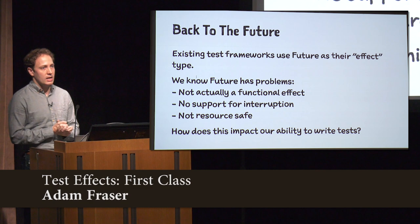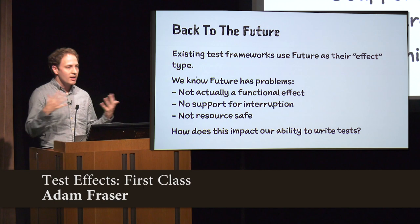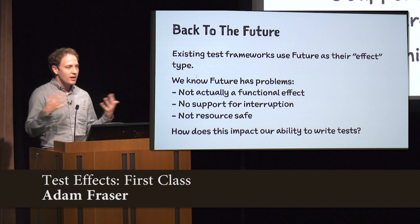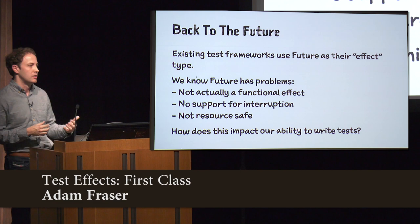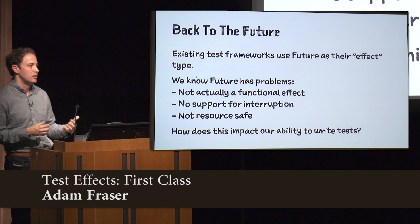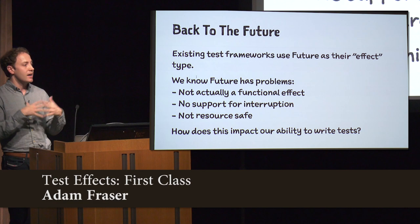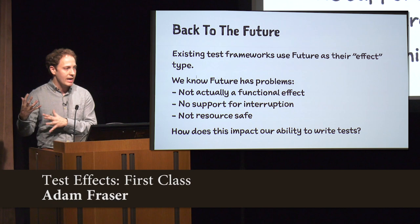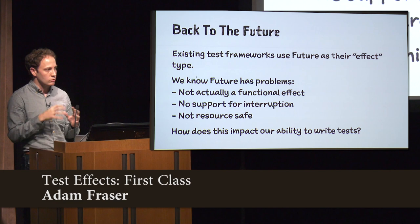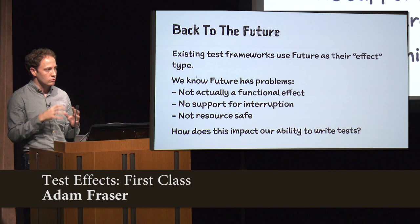As we go through that, I want us to think about the idea that with existing testing frameworks, they essentially don't know about whatever effect systems we have. ScalaTest doesn't have any idea what a Cats IO is or what ZIO is. So the only thing our testing frameworks see is a Future. And if we've been around functional programming enough, we know there are a bunch of issues with Future — it's an in-flight computation, not a description of a computation. We can't compose it by running it multiple times. It's not interruptible. It doesn't have any concept like bracket or managed for safe resource management. So we have all these things, but we throw them away when we go to a Future.